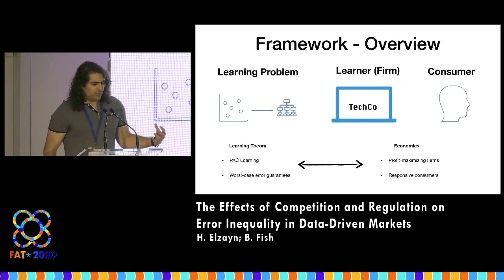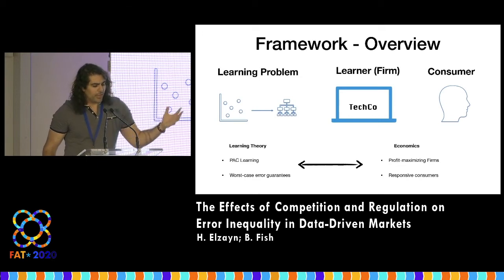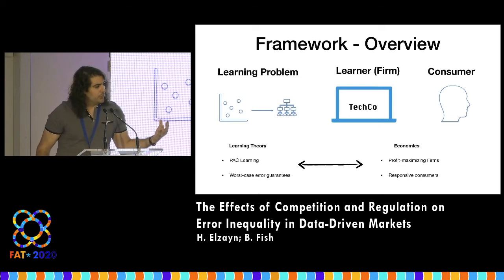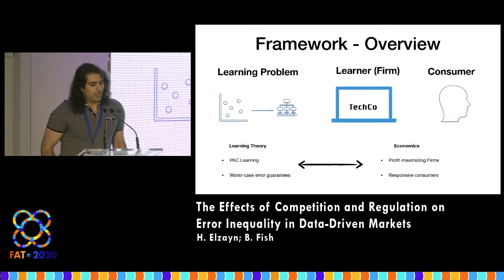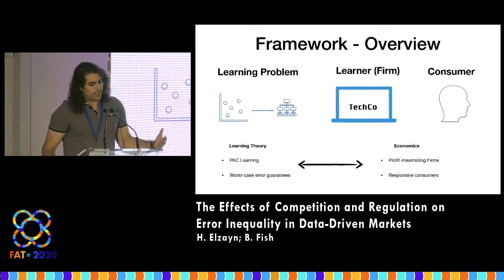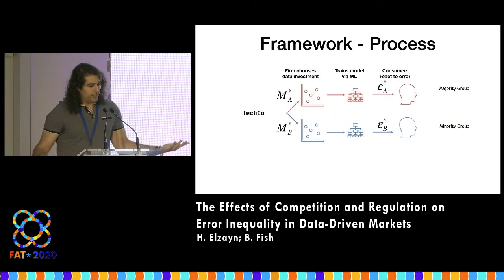At a high level, we are studying the learning problem and the interaction between the consumers and the firm. For now, think about a monopoly, although we'll relax that later. We use the lens of learning theory to look at the learning problem and economics to look at the economic interactions.